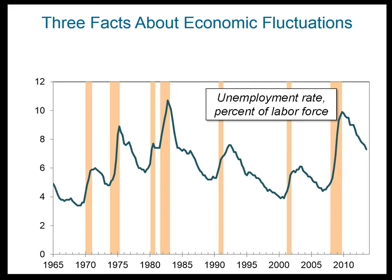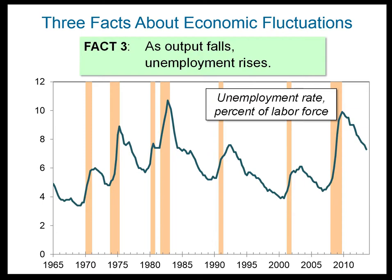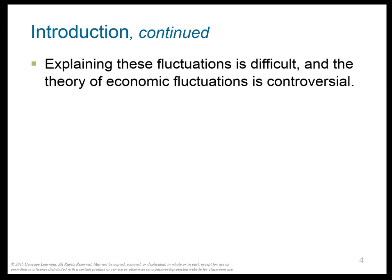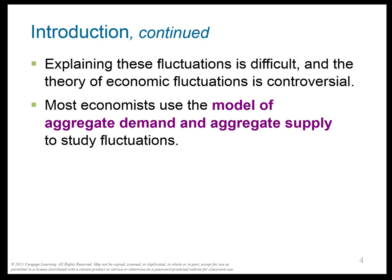Fact number three: every time output falls, unemployment rises. So when GDP goes down, unemployment goes up. So really, why does the GDP go up and down in the short run? That's difficult to understand, but I'm going to show you a model to help explain this. It's called the ASAD, or Aggregate Demand, Aggregate Supply Model, and we're going to use it to study the fluctuations.